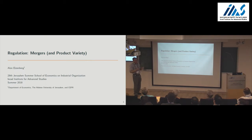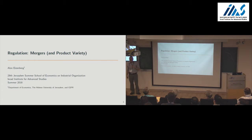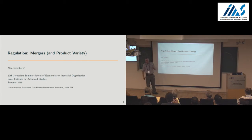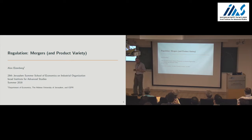The big deal would be to think about models in which not only prices, but also product selections are being endogenously determined, and how lessons from these models can affect how we think about mergers and even collusion. We'll tap into some of the stuff that came up endogenously during Ali's talk on all these things.